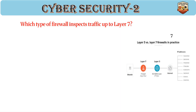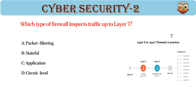Which type of firewall inspects traffic up to layer 7? Answer: C. Application. Application firewalls analyze traffic at layer 7. Can filter based on specific applications. Example: Web Application Firewalls (WAF).